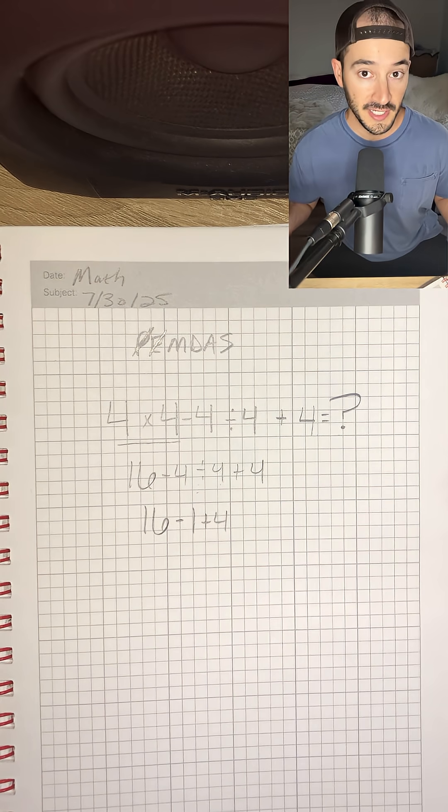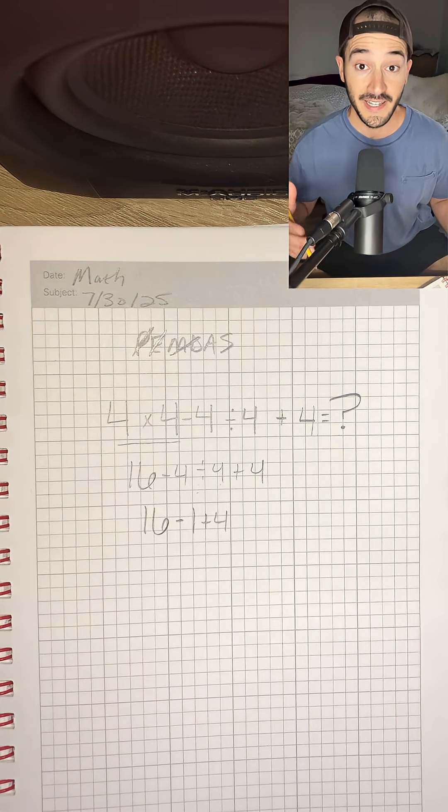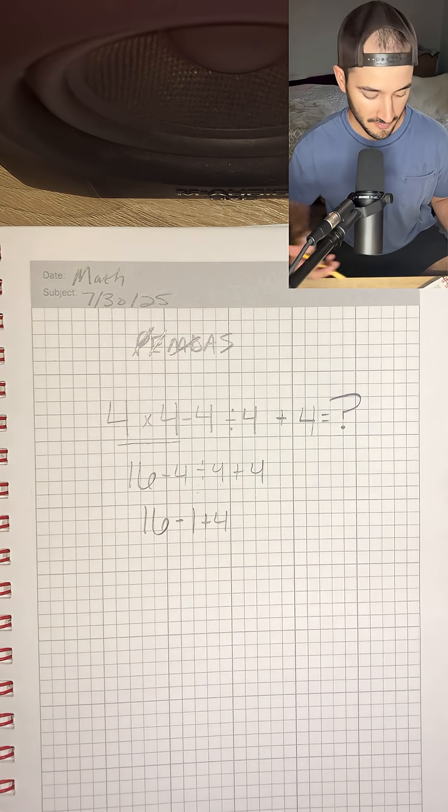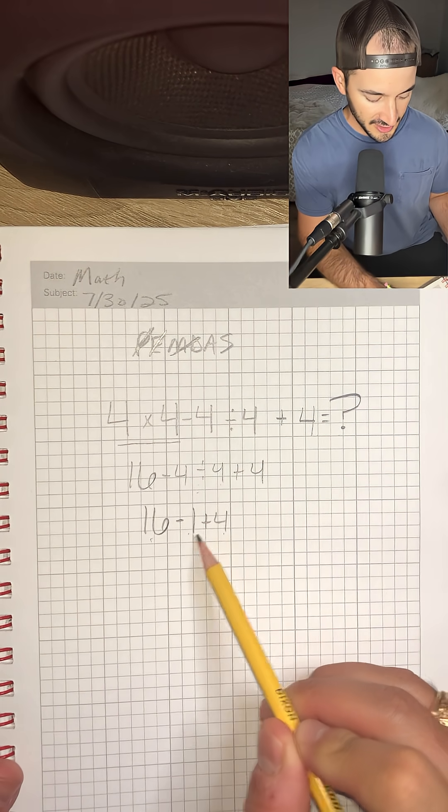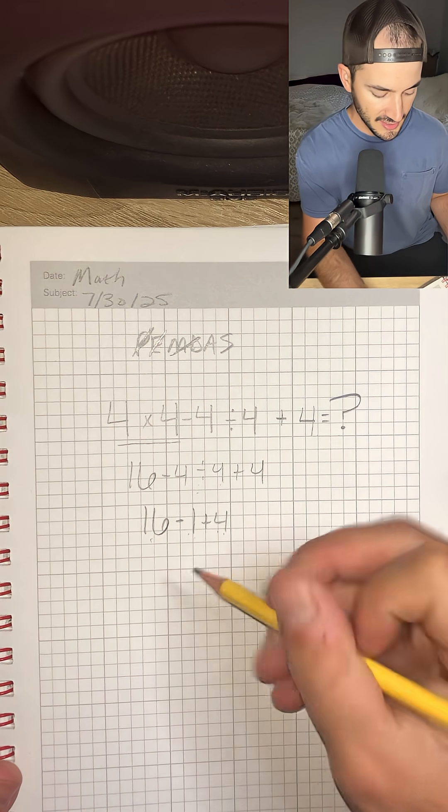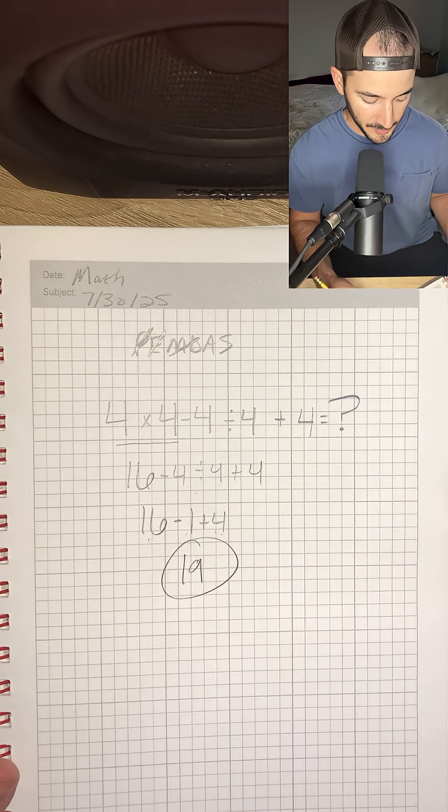So now we've done all the multiplication and division, and now we can do addition and subtraction. We have 16 - 1 + 4. So 16 - 1 is 15, plus 4 is 19. So 19 would be our final answer.